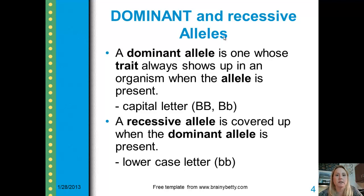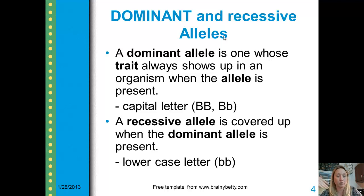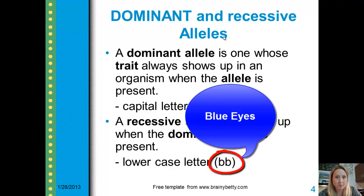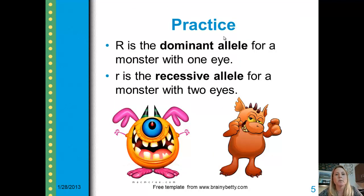Think of the dominant allele as a bully — he covers and does not let the recessive allele express himself at all. Now, the only way to express the blue-eyed trait would be to have two recessive alleles, or both lowercase bs. If the dominant allele is not present, just the two blue-eyed alleles, then you would have blue eyes. Let's look at a couple of examples, and I think it will help you out a little bit.